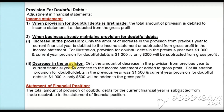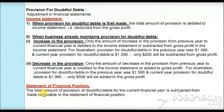Where there is a decrease in provision — for example, last year was $1,500 and this year it is $1,000 — the $500 difference is credited to the income statement, i.e., added to gross profit. In the statement of financial position, we take the total provision for doubtful debts for the current financial year and subtract it from the trade receivable balance.